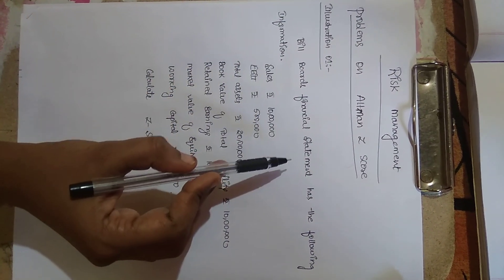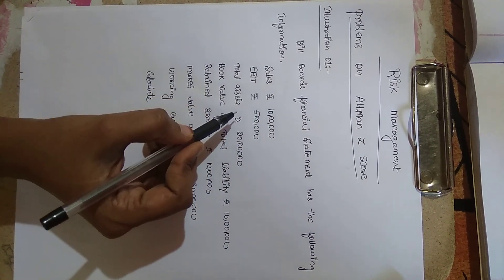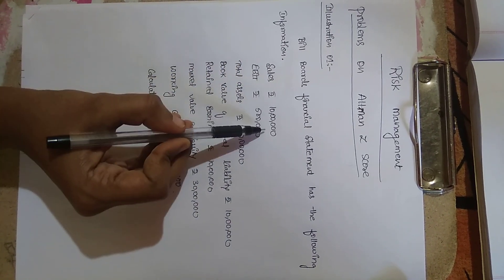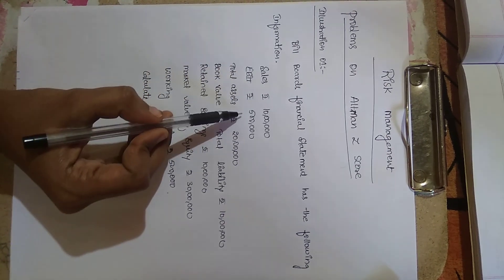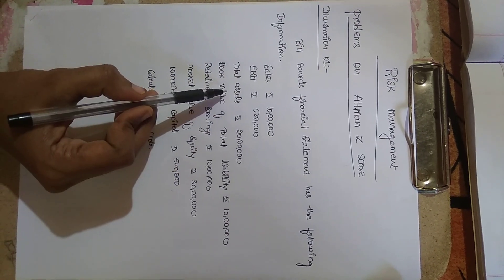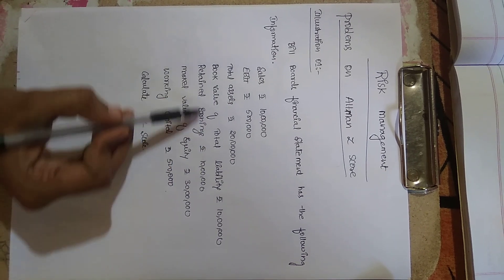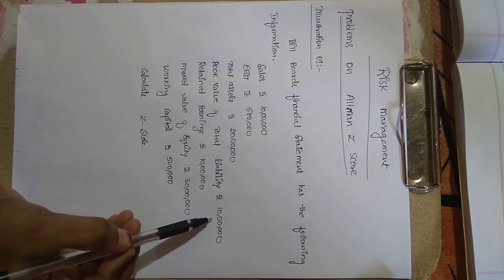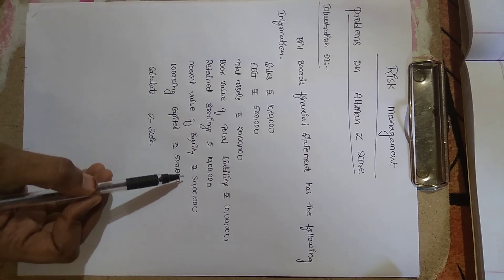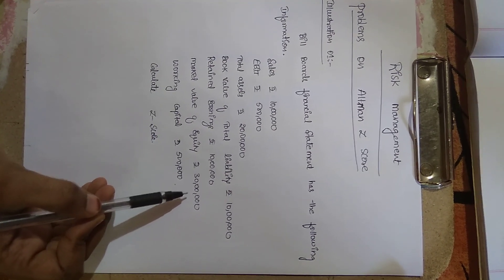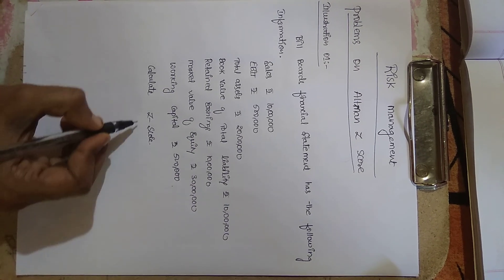Billboards Finance — Billboards financial statement has the following information: Sales rupees 10 lakh, EBIT (earnings before interest and tax) rupees 5 lakh, total assets rupees 20 lakhs, book value of total liability 10 lakhs, retained earnings 10 lakhs, market value of equity 30 lakhs, working capital 5 lakhs.